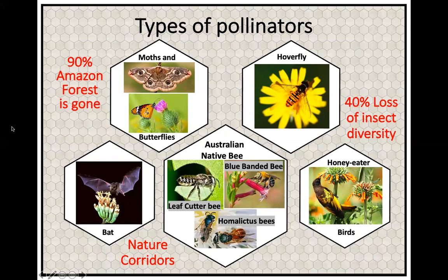We've got several types of pollinators: moths and butterflies, the hoverfly which is an Australian native, bats like fruit bats — there are flowers that only come out at night and bats really help with those — and our honeyeater birds. Then we've got our bees. Honeybees are really fantastic at pollination, but we do have Australian native bees, and believe it or not, there are some flowers more suited to native bees than to the honeybee.